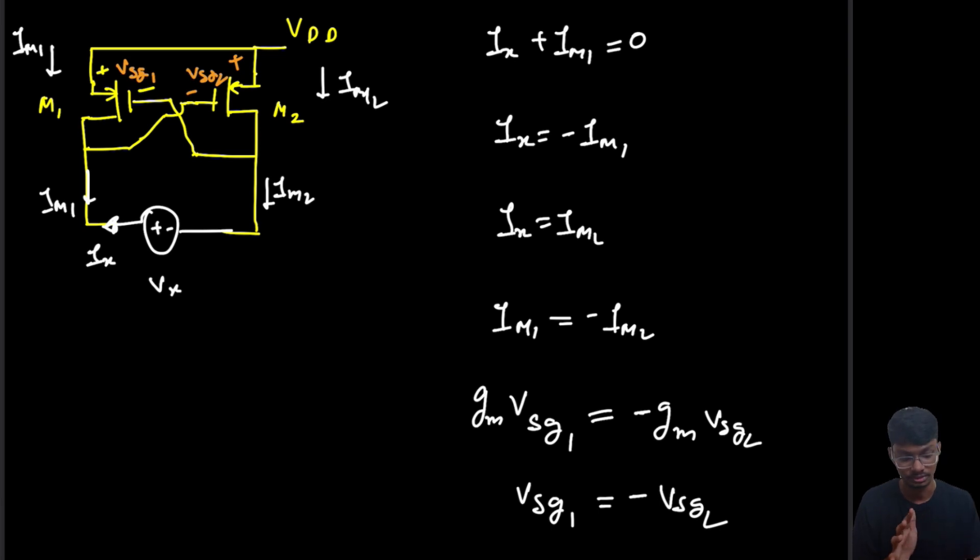Now let's write a KVL equation across this V_x voltage source. We will go from this point, come back and complete the loop. Let me write the KVL equation: minus V_SG1 plus V_SG2 plus V_x equals zero.